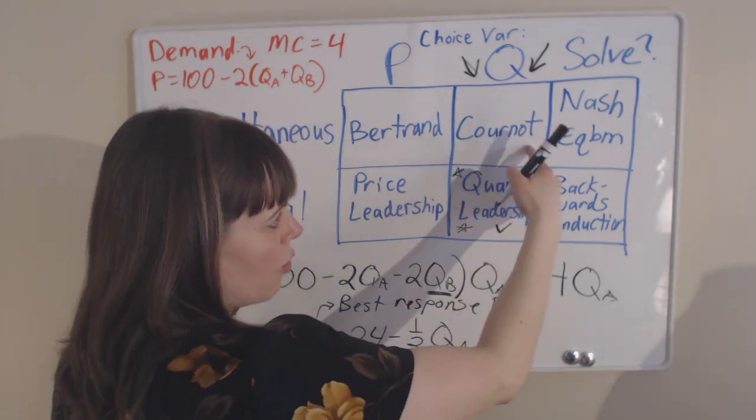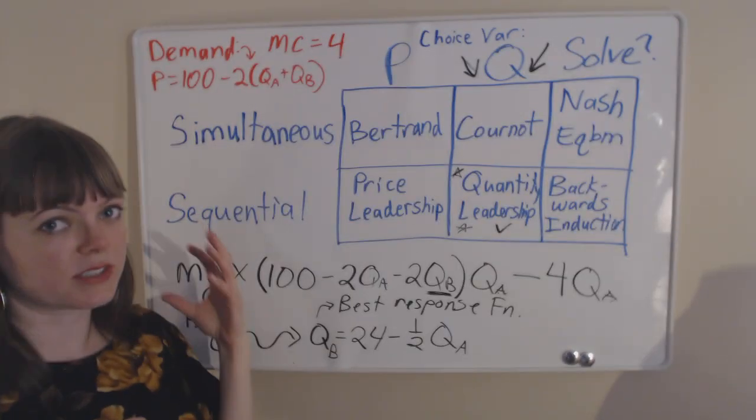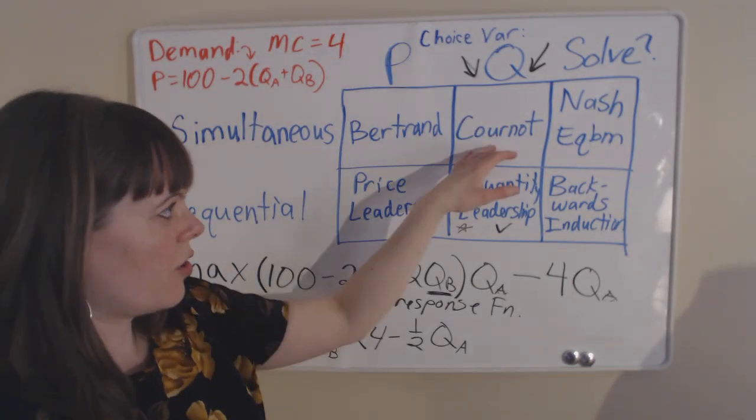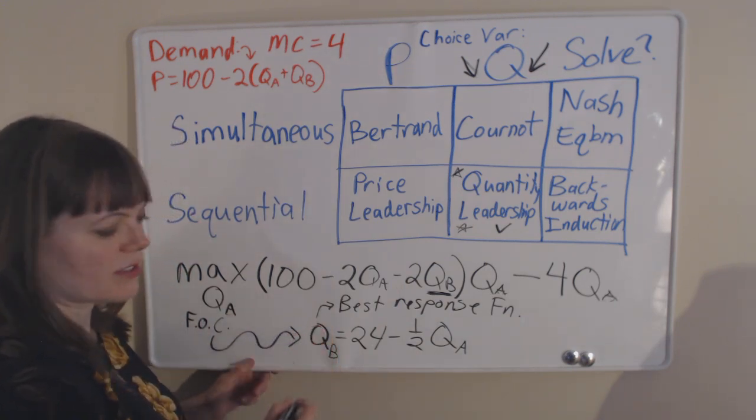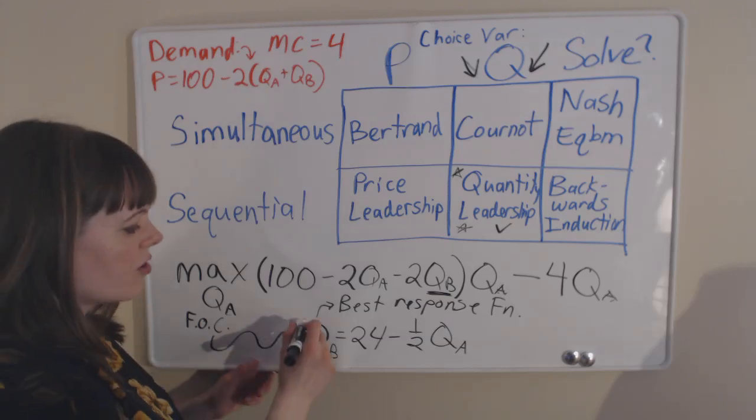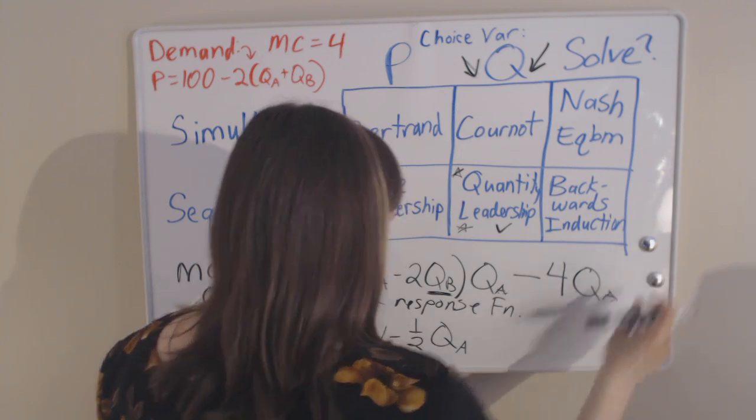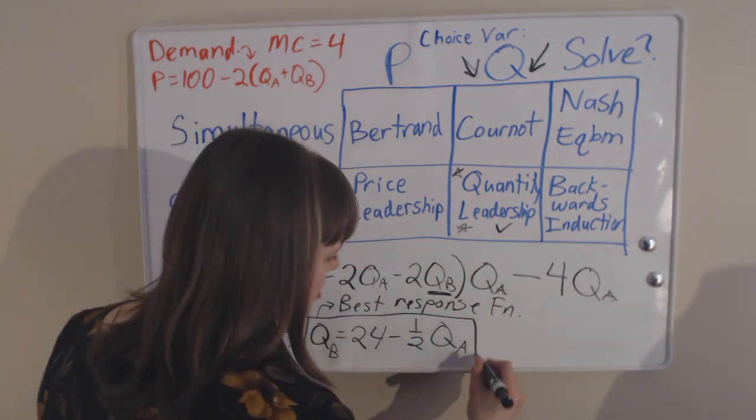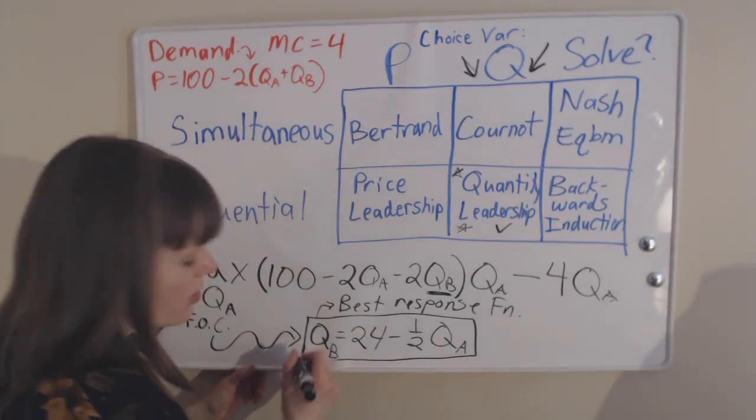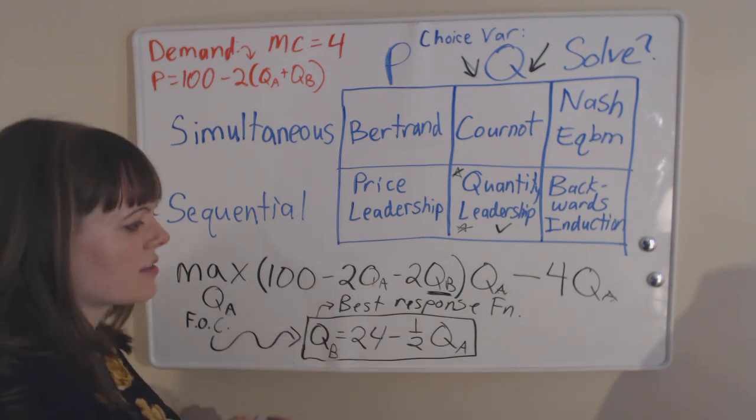What about a Cournot? What if this problem, instead of being quantity leadership, were simultaneous? So it's a Cournot oligopoly. In that case, we solved for firm B's best response function. And we could also go back and solve for firm A's best response function. And we have a pretty good hunch about what that's going to be if this is firm B's best response to A, and if those problems are symmetric.